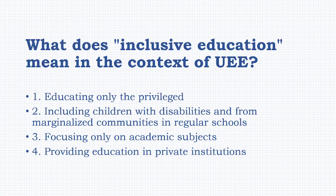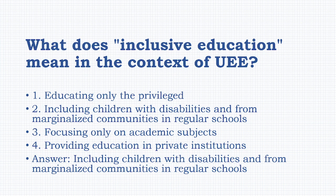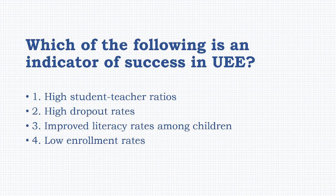What does inclusive education mean in the context of UEE? Options: educating only the privileged, including children with disabilities and from marginalized communities in regular schools, focusing only on academic subjects, providing education in private institutions. The answer is: including children with disabilities and from marginalized communities in regular schools.